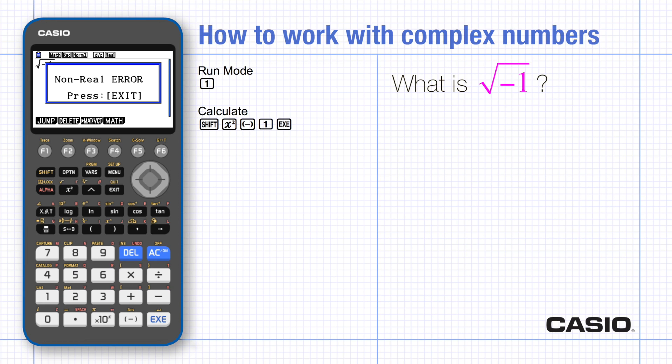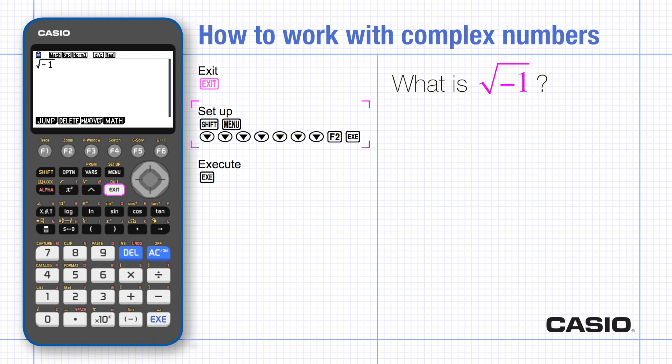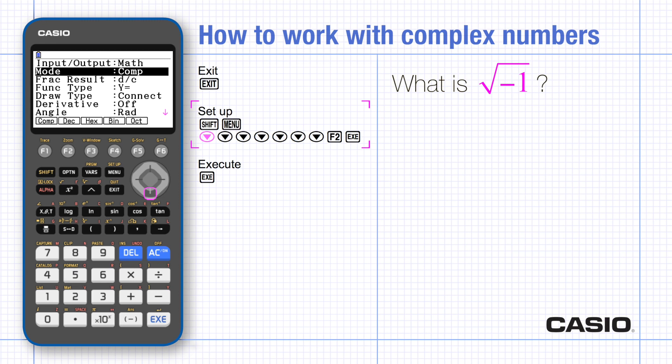To see the complex answer we need to change the settings. Exit the error screen and go to setup. Scroll down and switch to a plus bi and execute.